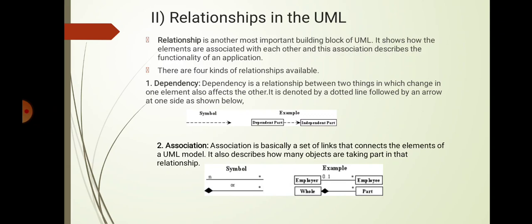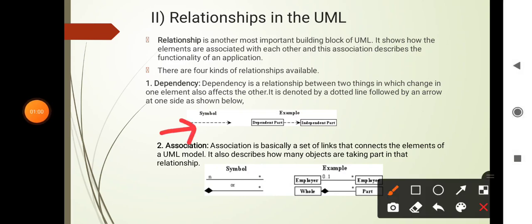First is dependency. Dependency is a semantic relationship between two things in which changes in one element also affects the other one. A change in specification of one thing may affect another thing that uses it, but not the reverse. Graphically, dependency relationship is represented with a dashed line with an arrow. This is the symbol of dependency and this is the example for dependency.